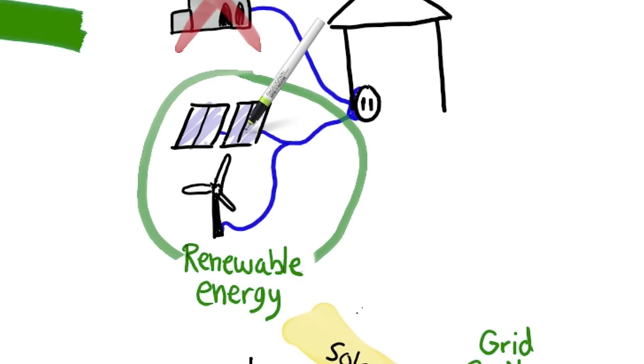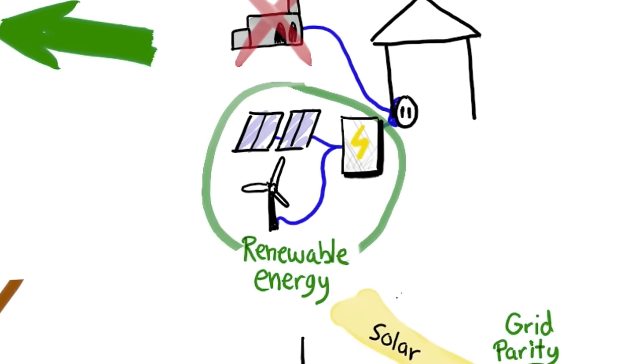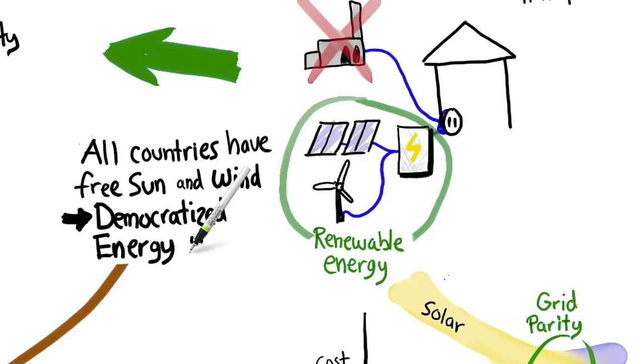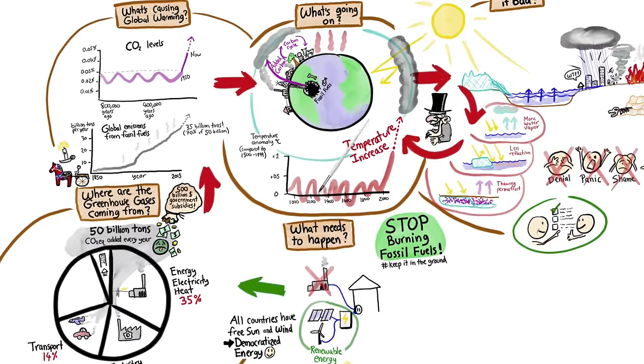Of course, we need energy even when the sun isn't shining and the wind isn't blowing, so the next big challenge is energy storage. But battery technology and other storage solutions are catching up fast. An added bonus to all this is that all countries have free access to sun and wind—it is basically democratized energy. So less need for countries to bicker with each other over unevenly distributed oil reserves and gas pipelines and stuff.